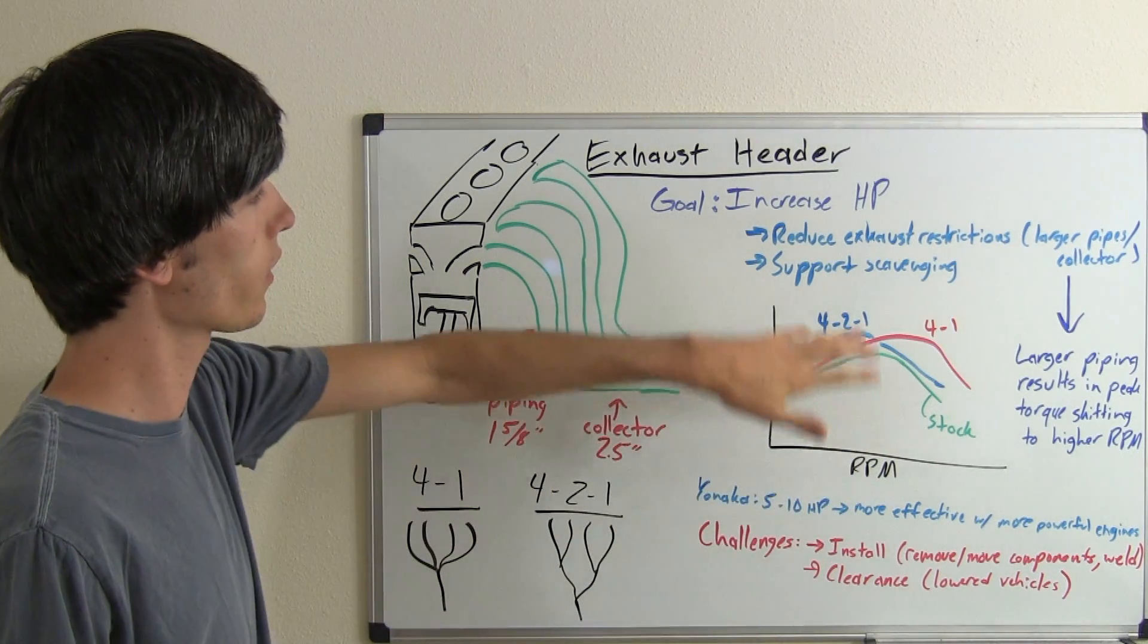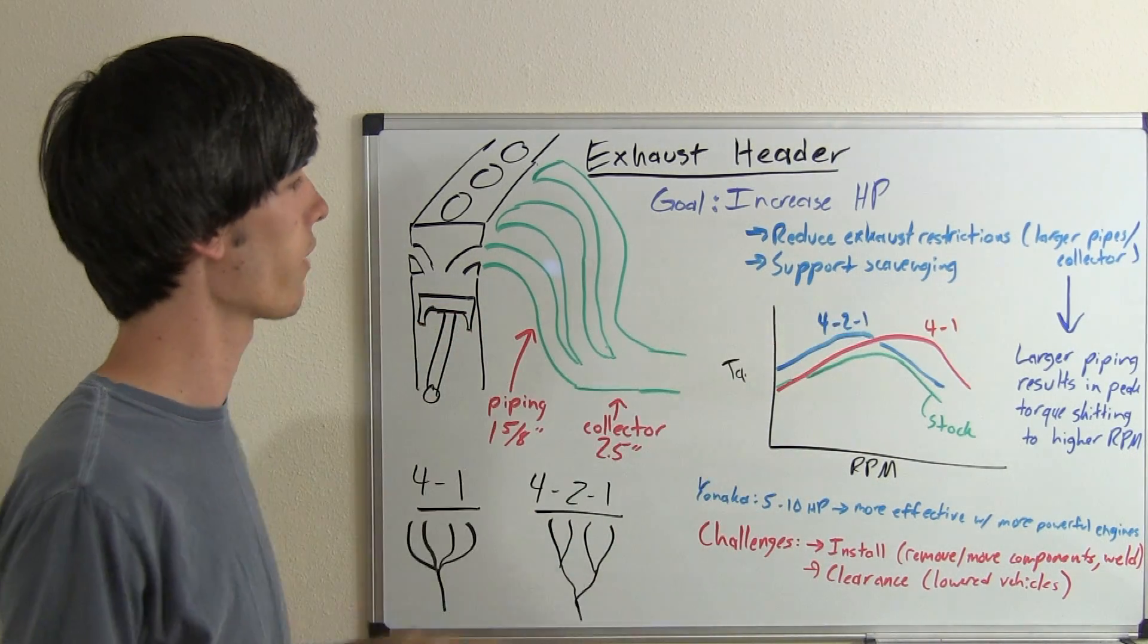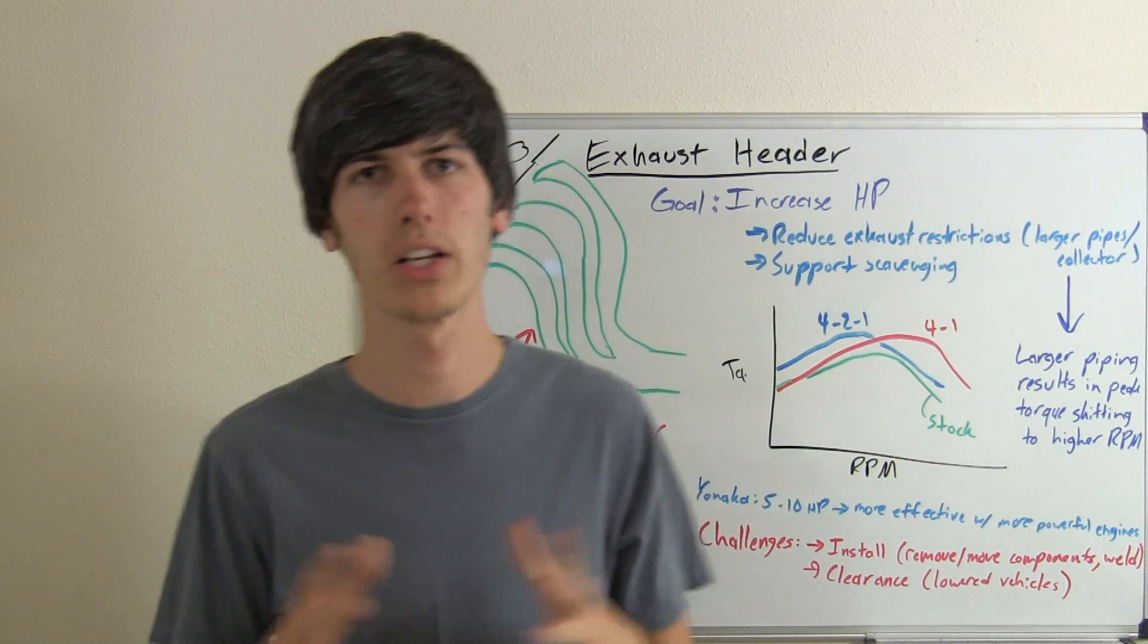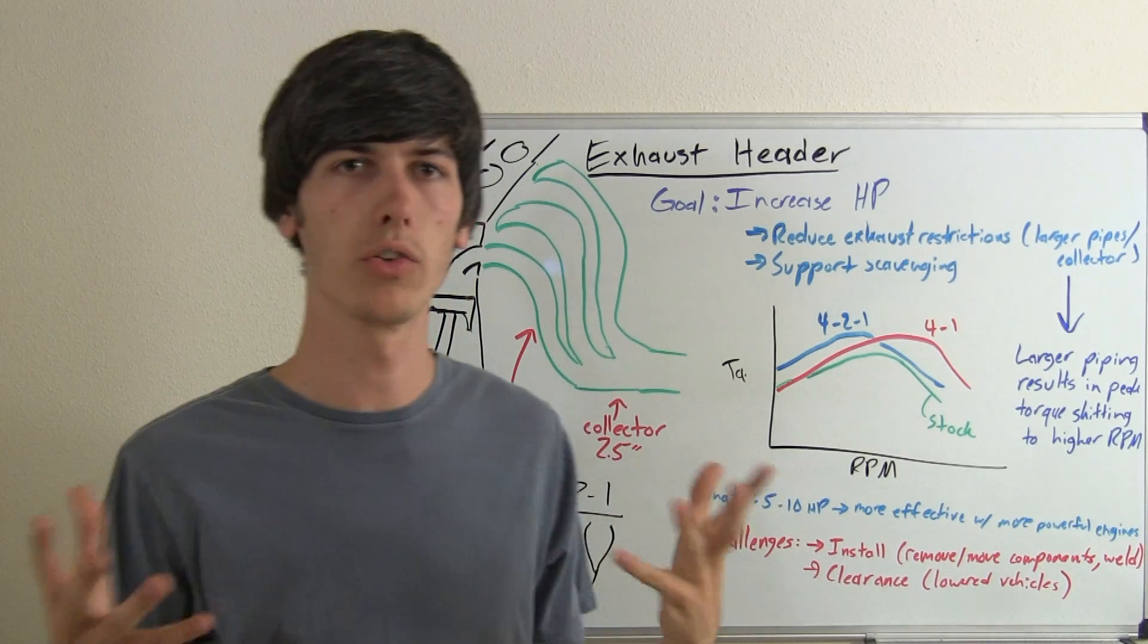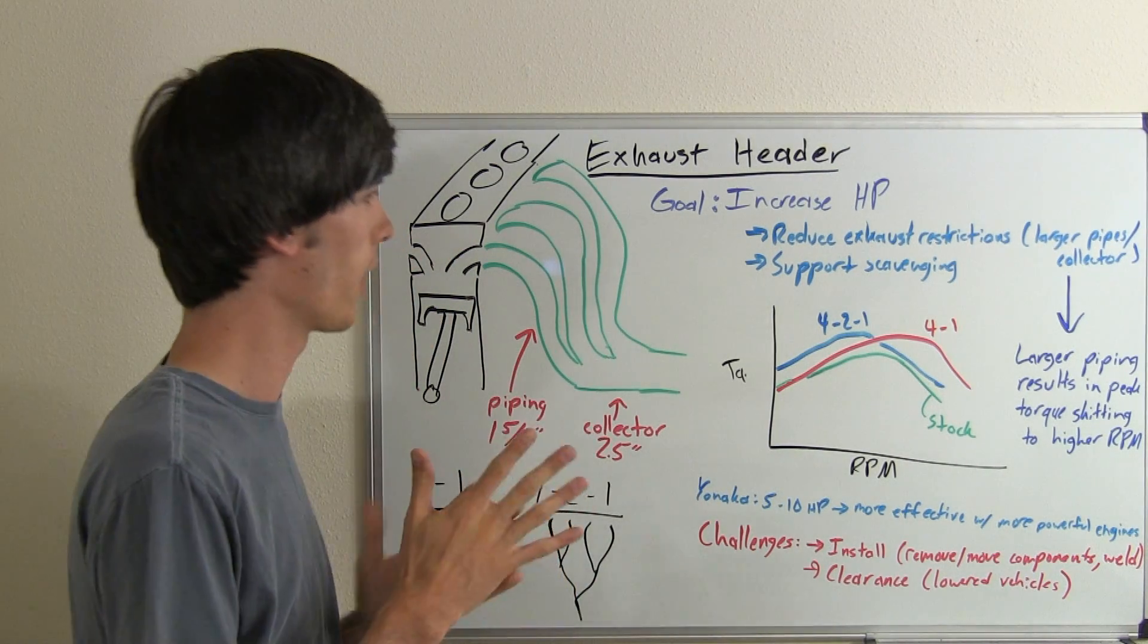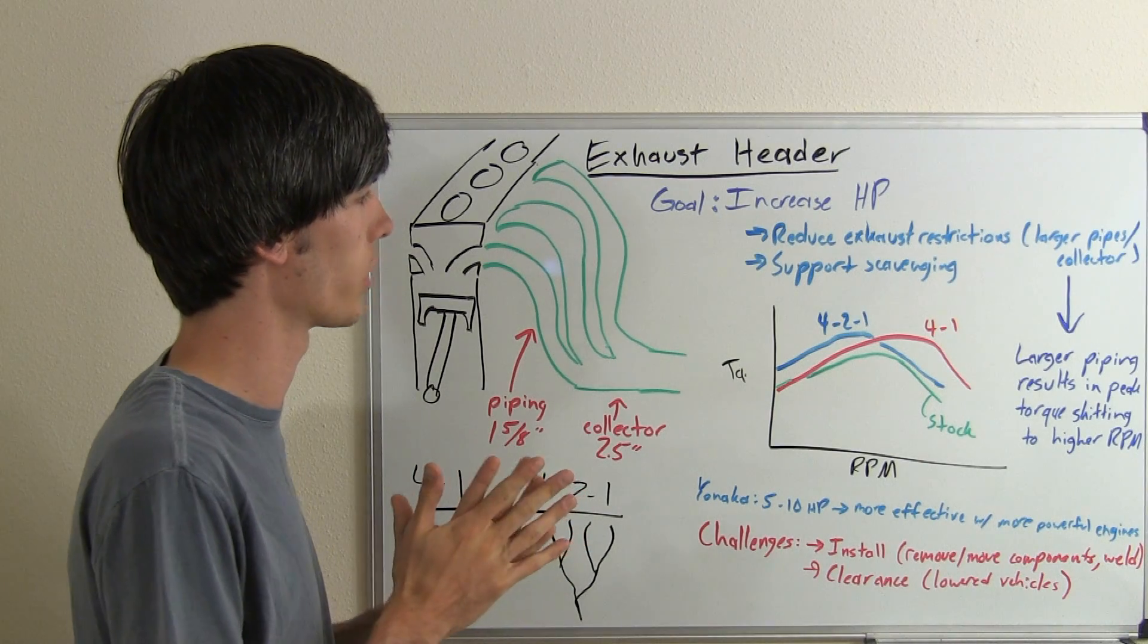The other thing this does is it supports scavenging. These long tubes support exhaust scavenging. If you've watched my video on how exhaust can be used to increase horsepower, you should be able to understand how scavenging is done in order to increase horsepower.